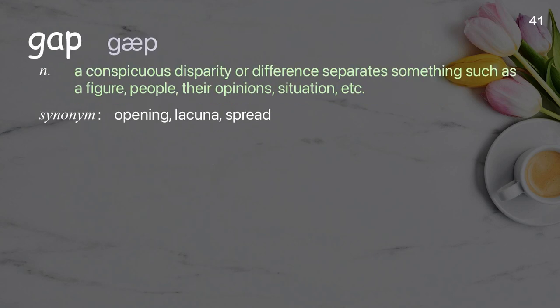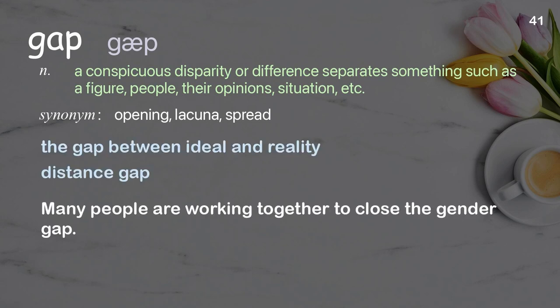Gap. A conspicuous disparity or difference that separates something such as a figure, people, their opinions, situation, etc. Examples: the gap between ideal and reality, distance gap. Many people are working together to close the gender gap.